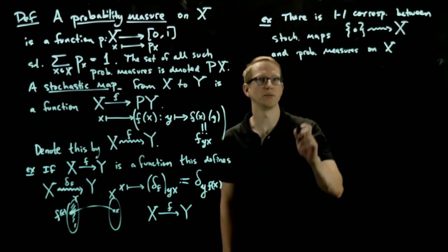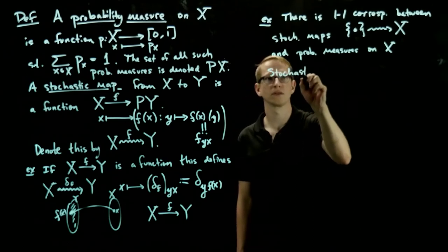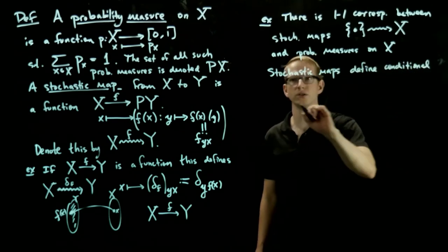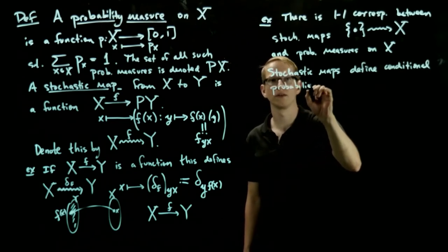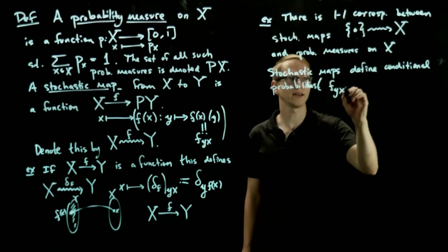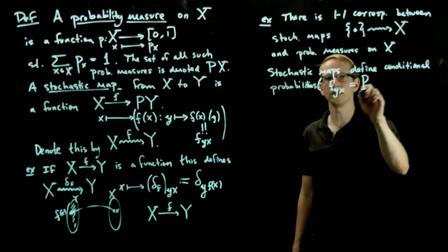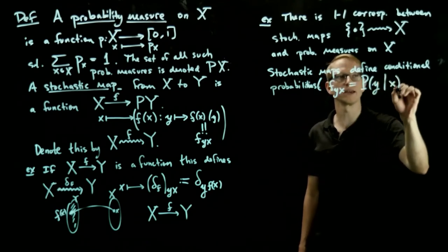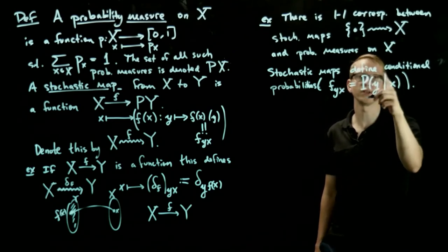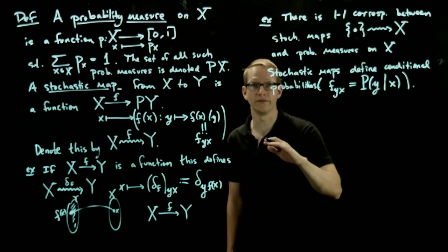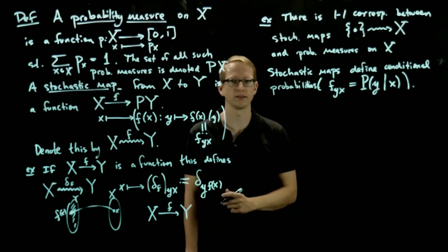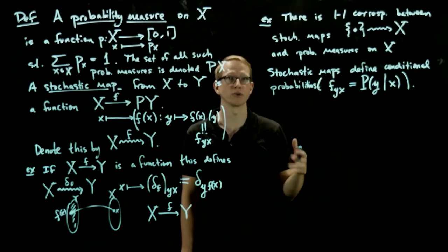Stochastic maps define conditional probabilities, or at least some kind of restrictive notion of conditional probabilities. The reason is because f_yx, you can think of this as the probability of y occurring given that x has occurred. If you have a definition of conditional probability and you are looking at single element events, then this definition coincides with the one you're thinking of for finite sets, and again, single element events. But if you're not, then we're going to think of this as our notion of a conditional probability.